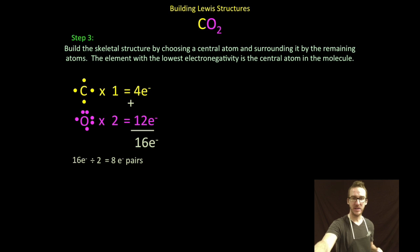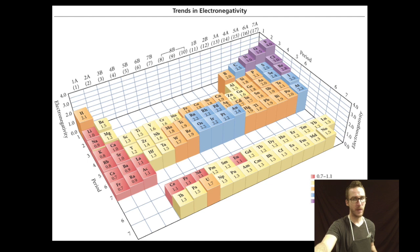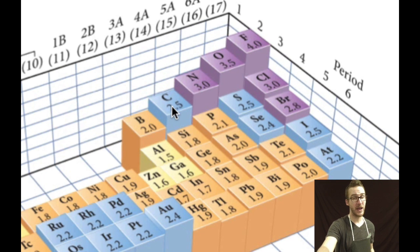Step three, build a skeletal structure by choosing a central atom and surrounding it by the remaining atoms. Remember, your element with the lowest electronegativity is going to be your central atom. This time, it's a little trickier because I don't have hydrogen. I go to my periodic table and compare electronegativities of carbon and oxygen. Carbon is the less electronegative.